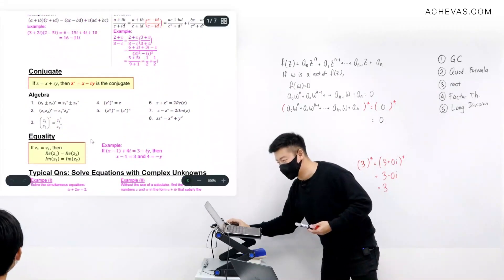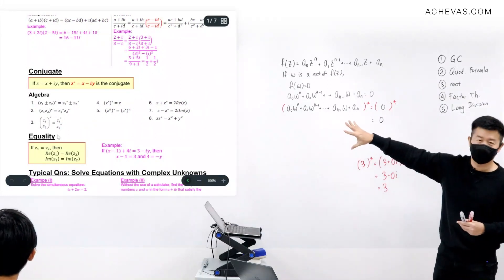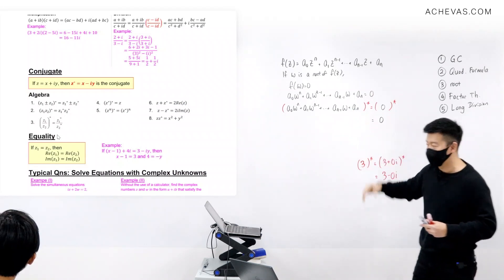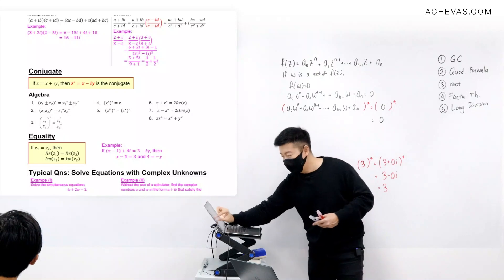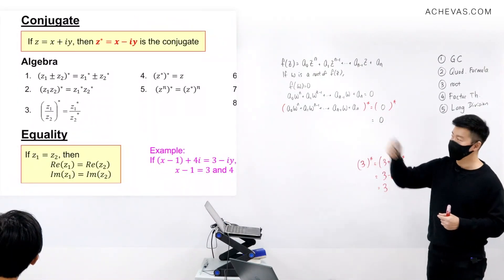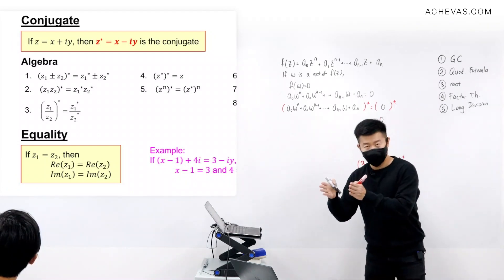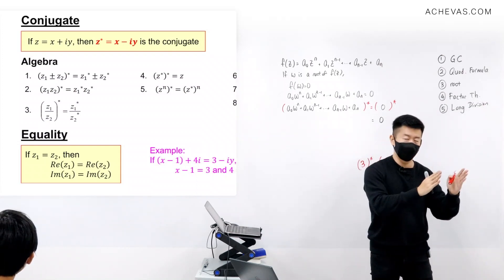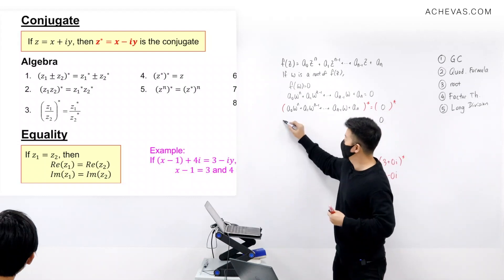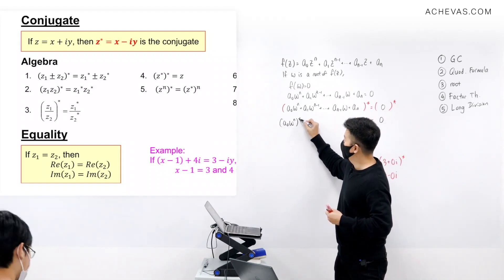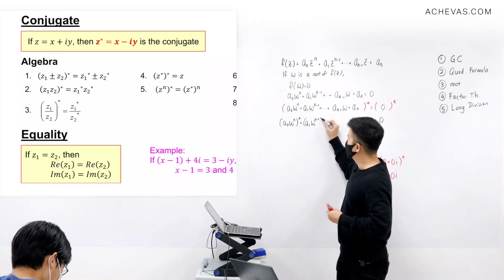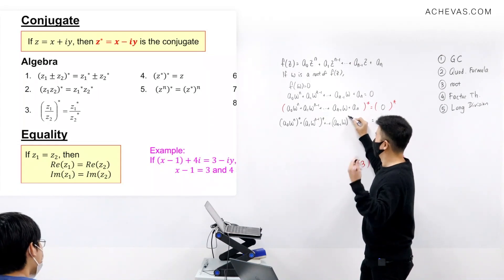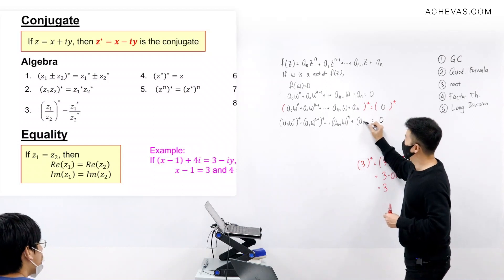We are going to make use of what we discussed about conjugate properties. We can use property 1, which says that if you have one complex number plus or minus another complex number, all conjugated, then it equals the first number conjugate plus or minus the second number conjugate. Applying this gives us: a0 times w to the power of n conjugated, plus a1 times w to the power n minus 1 conjugated, all the way until a_{n-1} times w to the power 1 conjugated, then plus a_n conjugated. We can also apply property 2, which says that a product conjugated equals the product of the individual conjugates. This gives a0 conjugate times w to the power n conjugate, plus a1 conjugate times w to the power n minus 1 conjugate, all the way until a_{n-1} conjugate times w conjugate, and finally a_n conjugate.